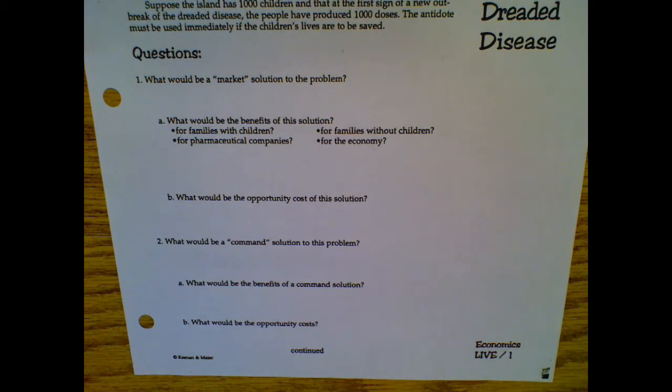So the first question is, what would a market solution to this problem be? And remember, in a market economy, individuals get to decide what is going to be produced, how it's going to be produced, and then how are we going to distribute it? And in a market economy, it's who values it the most, and that's we vote on how we value something by the amount of money that we're willing to pay for this.